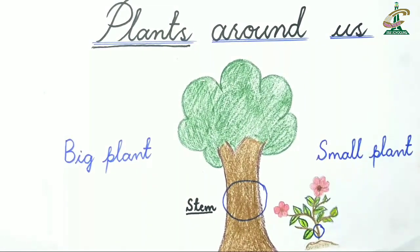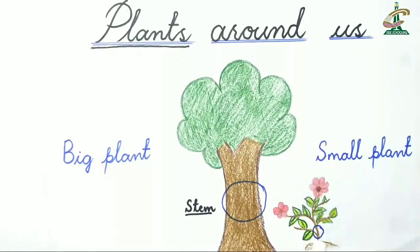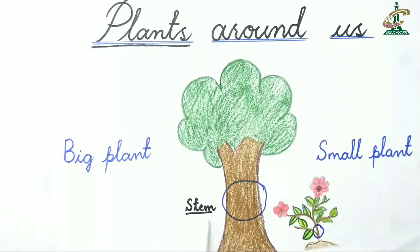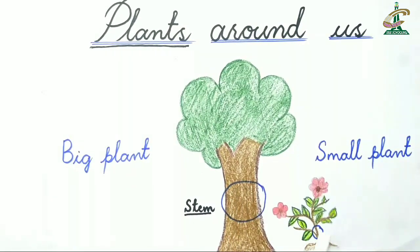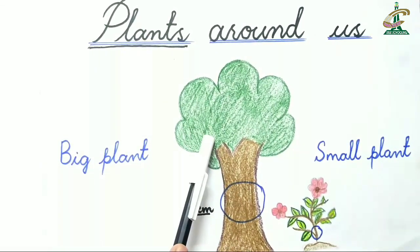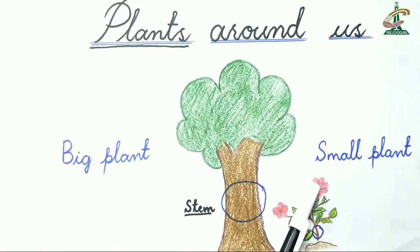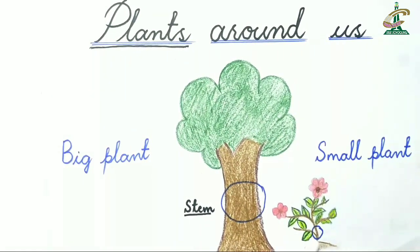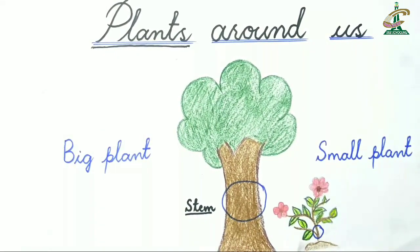Students, do you know what is a stem? This part of the plant is called the stem. So students, based on the size — how big or how small the plant is — and the type of stem, plants are of different types.